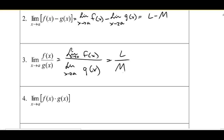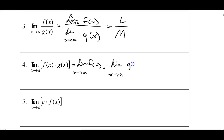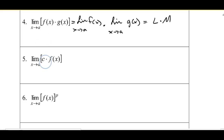Number four — same thing with the product: the limit of the product of functions is the product of the limit of the functions, equal to L times M. Number five is the limit of a constant times a function: we can pull that constant out, so it's the constant times the limit of the function, or C times L. Number six is the power rule: if I want the limit of a function raised to a power P, I can raise the limit to that power P, giving me L to the power P.